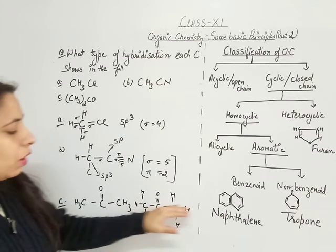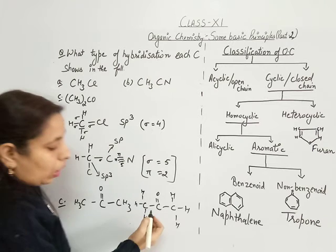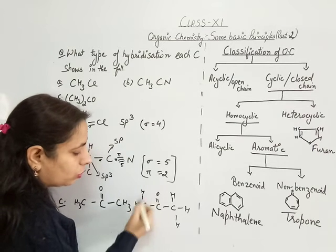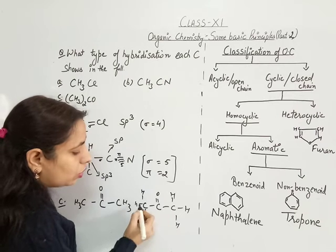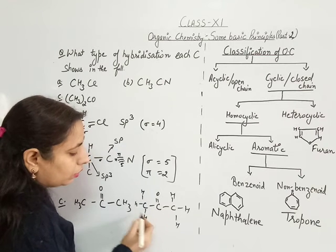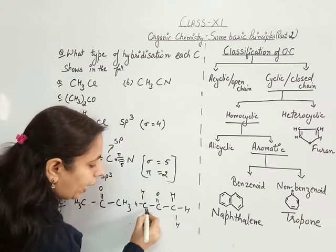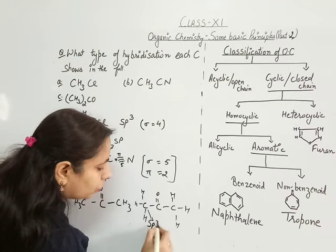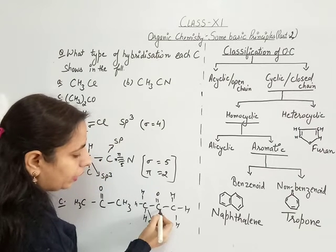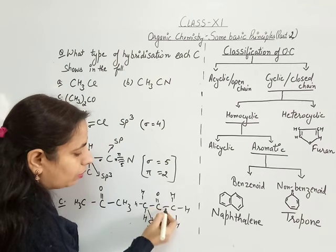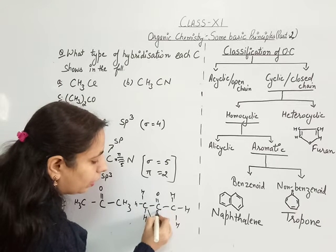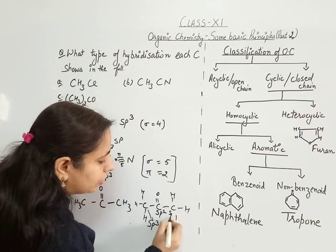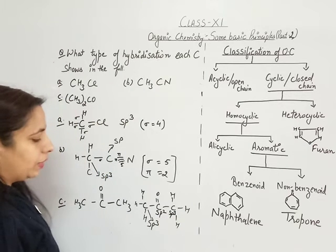We have to find the hybridization of each carbon. The terminal carbons are each forming single bonds with three hydrogen atoms and one carbon atom — all sigma bonds — hence each is SP3 hybridized. The central carbonyl carbon has 3 sigma bonds and 1 pi bond, so it is SP2 hybridized. The other terminal carbon is again SP3 hybridized.